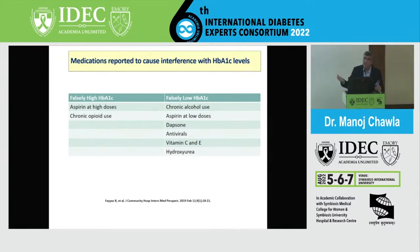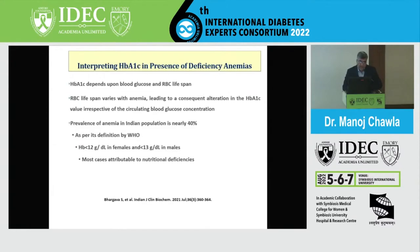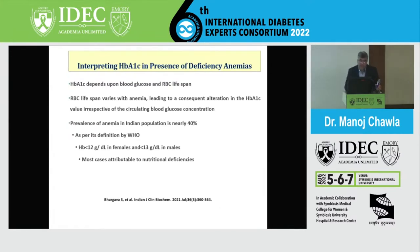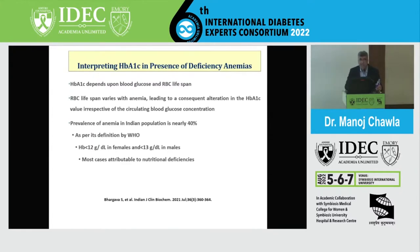How do we interpret A1C in the presence of severe deficiency anemias? HbA1C depends on blood glucose and RBC lifespan, and RBC lifespan varies with anemia, altering the A1C value. In iron deficiency anemia, the lifespan of the red blood cell increases, making cells prone to more glycation. There is also more malondialdehyde present, which increases glycation. So in severe iron deficiency anemia, increased lifespan and more glycation result in a falsely high HbA1C.